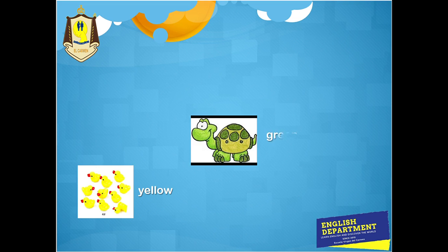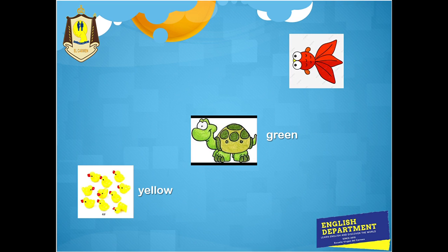¿De qué color es esa tortuga? Vamos a ver. Green. Es verde. Verde - green. ¿De qué color es ese pez? Red, ¿verdad? Rojo - red. Now repeat: yellow, green, red. Yellow, green, red. Yellow, green, red.